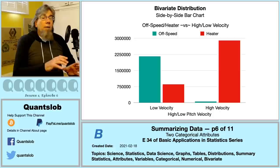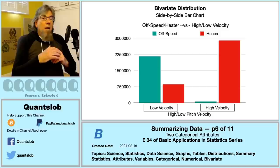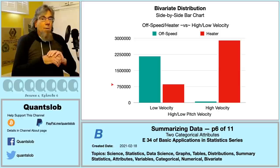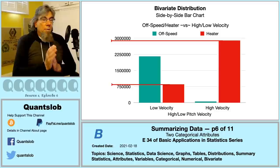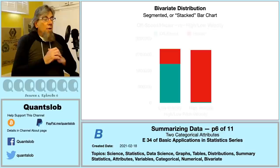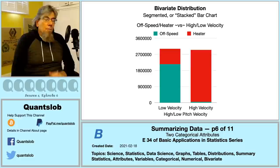A side-by-side frequency bar chart is pretty effective here. We split the x-axis based on low velocity or high velocity, and within each category we split by heater/off-speed using color or texture. This highlights that heater pitch types are much more prevalent among high-velocity pitches — exactly what we'd expect. We can also stack the bars to obtain a segmented or stacked frequency bar chart, which is also a very popular way to show the bivariate distribution of two categorical attributes.